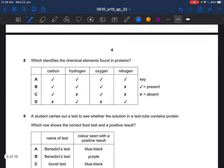Next question, which identifies the chemical elements found in proteins? Proteins have carbon, hydrogen, oxygen, nitrogen, which is A. For carbohydrates and lipids, they have carbon, hydrogen, oxygen, while for nucleic acids they have an additional phosphorus.